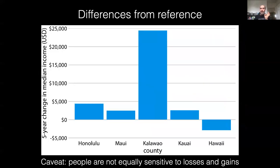The reality is, even though that's the same information, it is often perceived differently by people. We tend to be loss averse — we perceive losses more than gains.